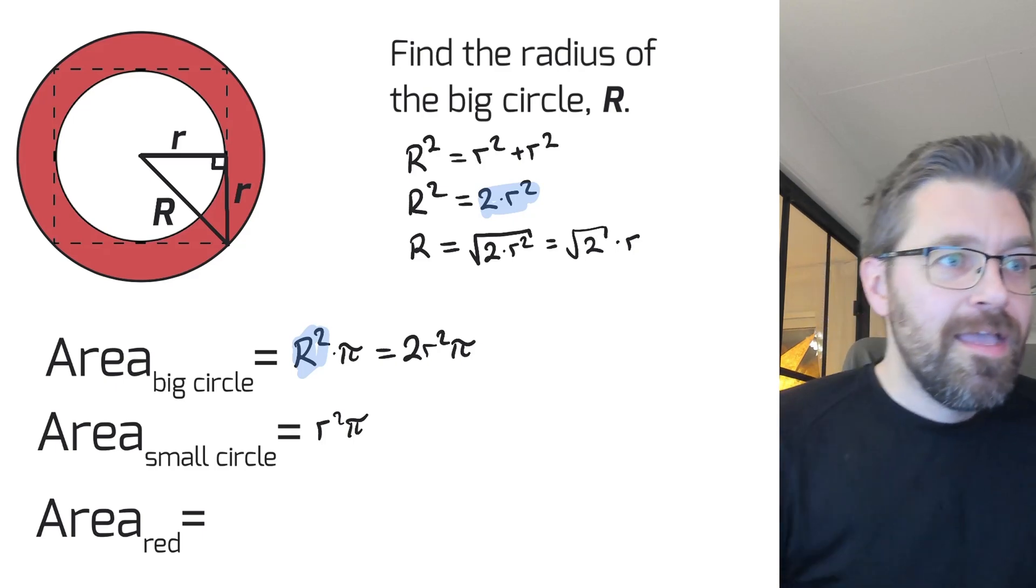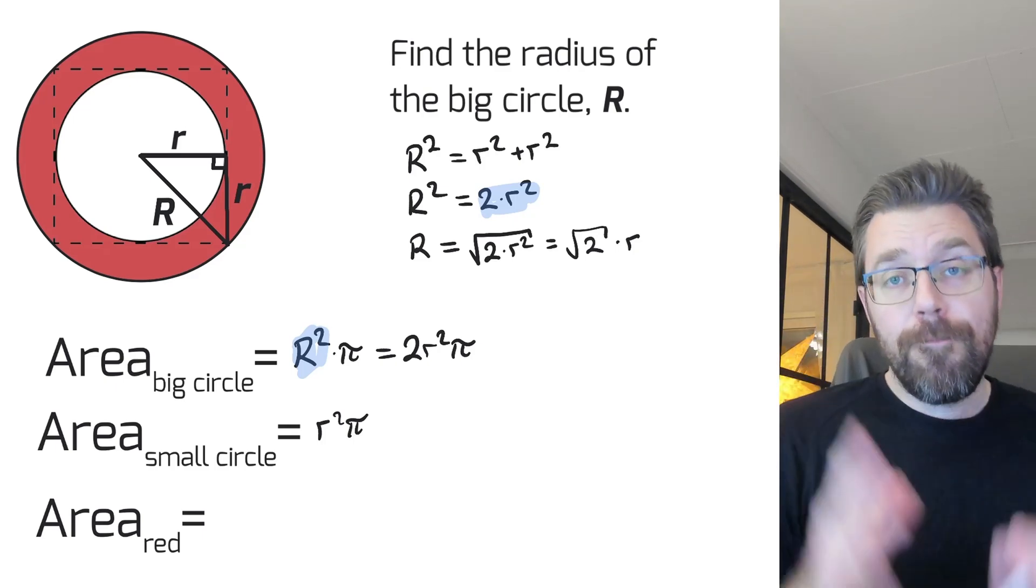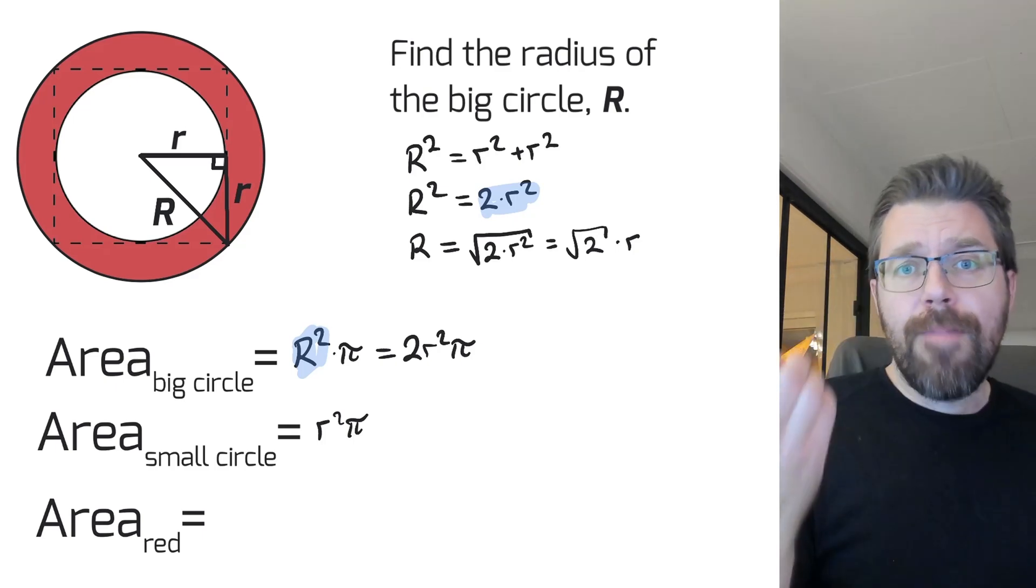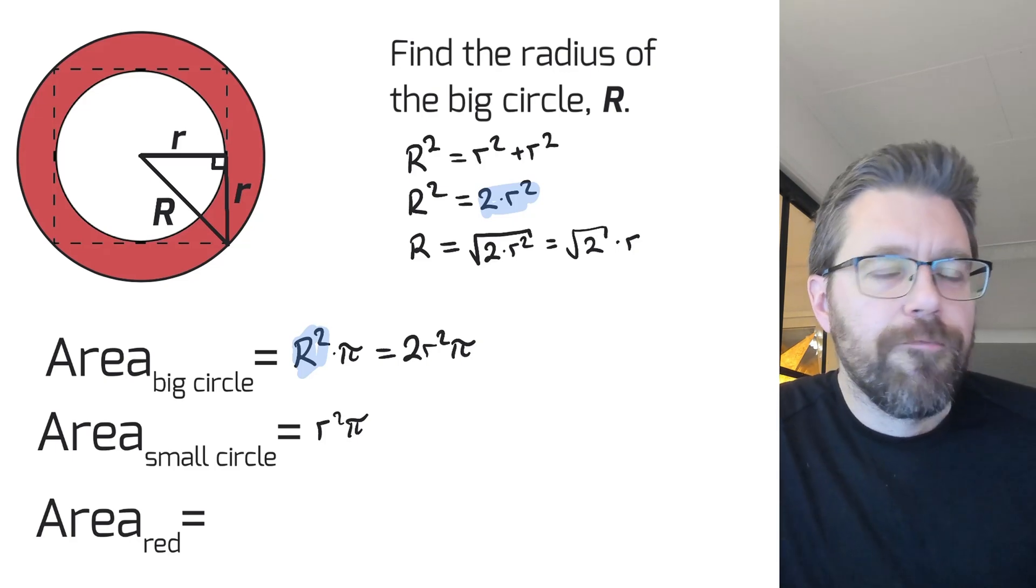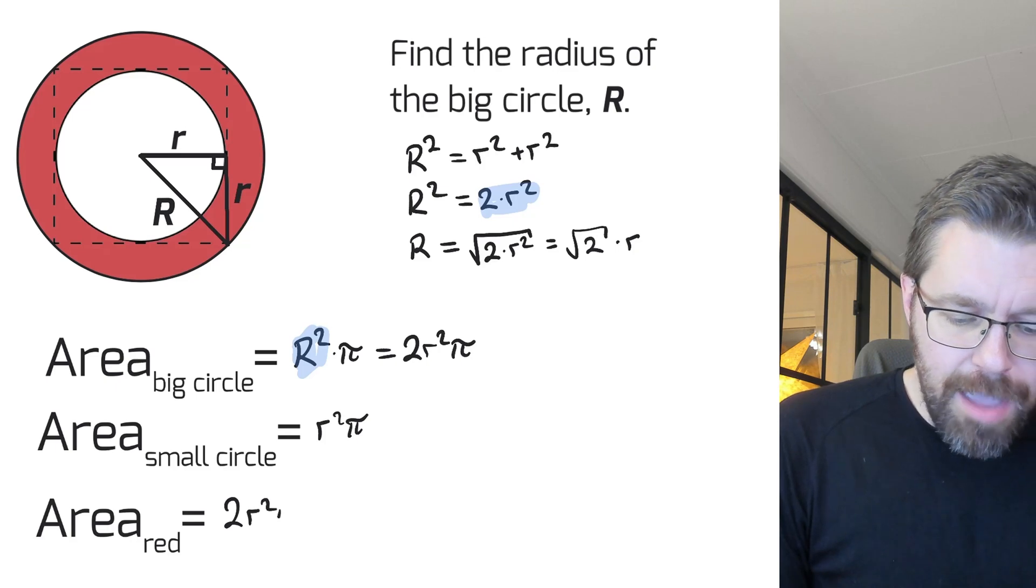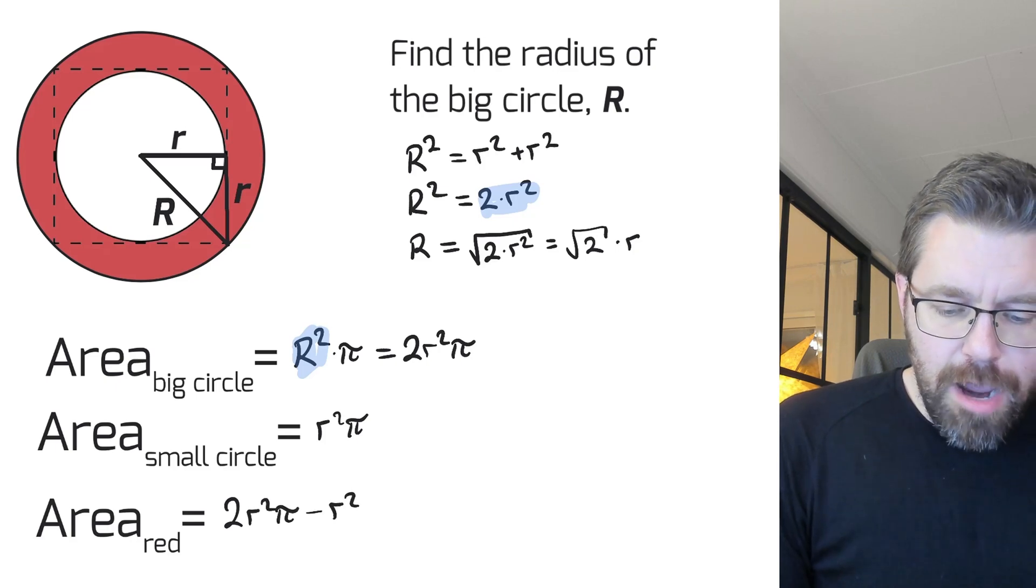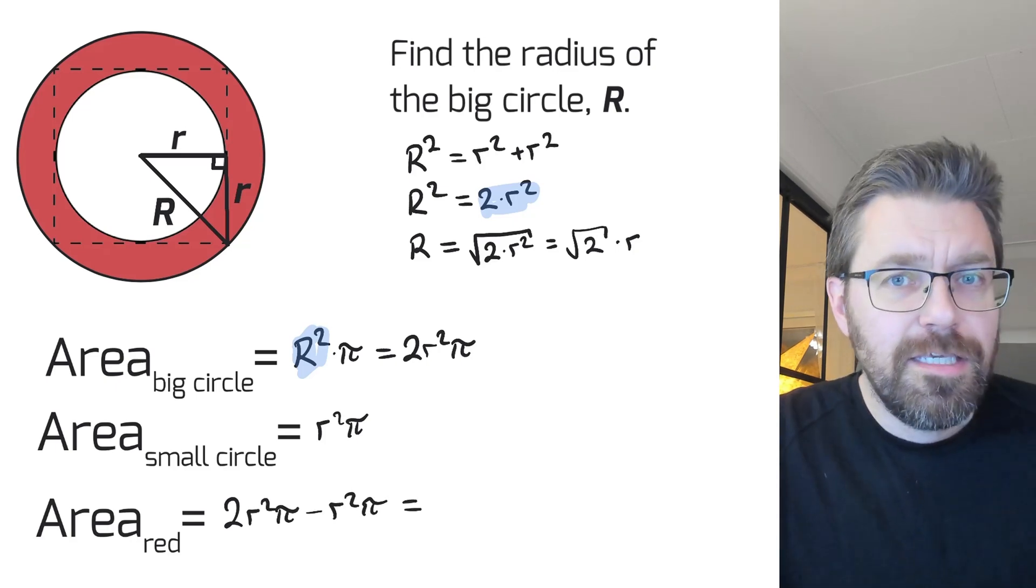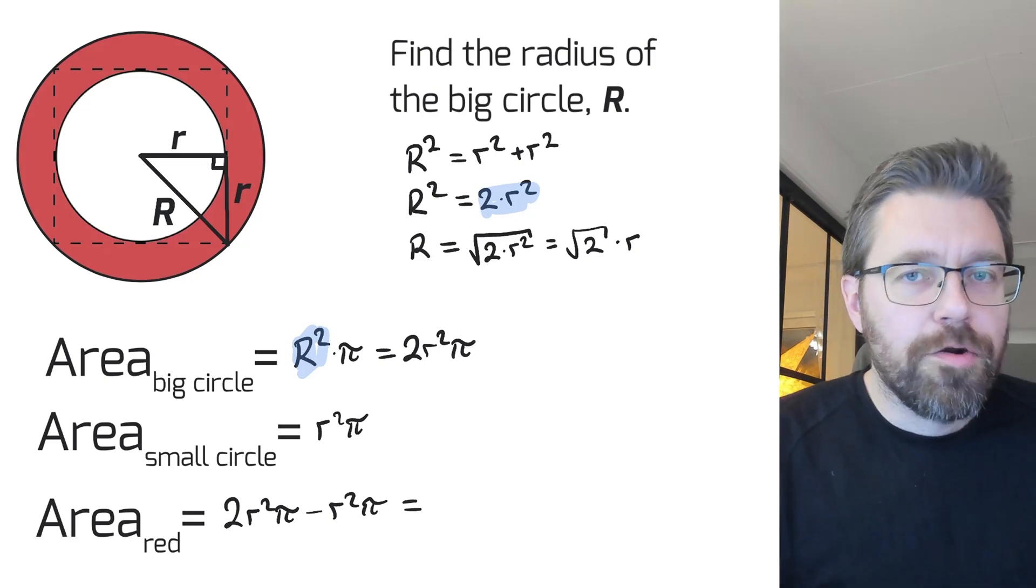The area in the picture is of course you take the area of the big circle and minus the area of the small circle. So we have two r squared pi minus r squared pi, it equals one r squared pi.